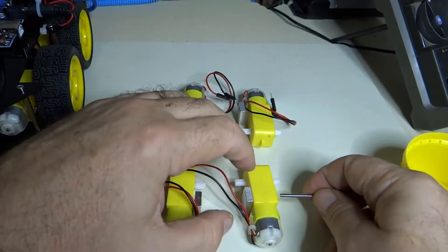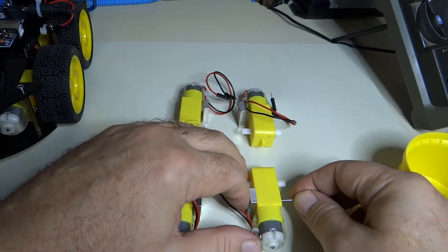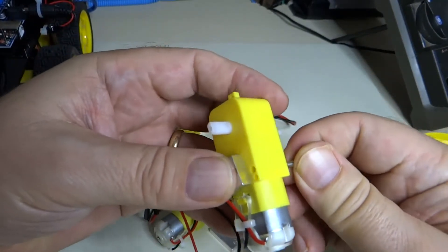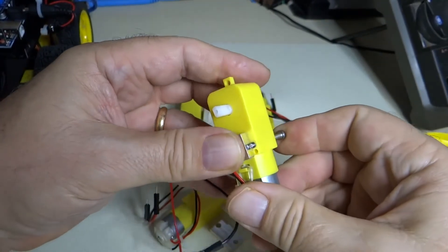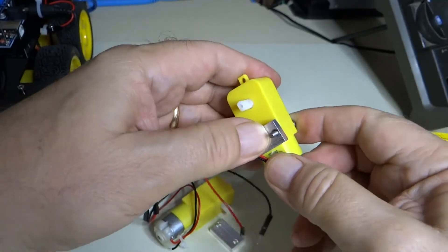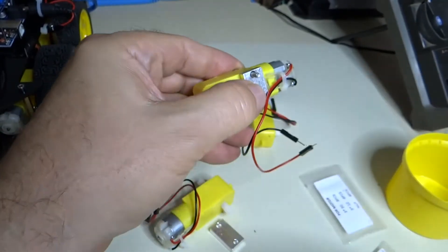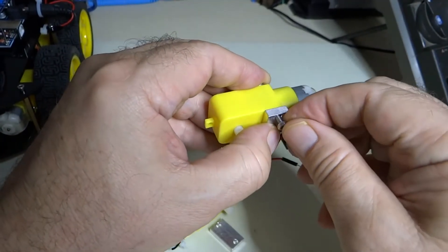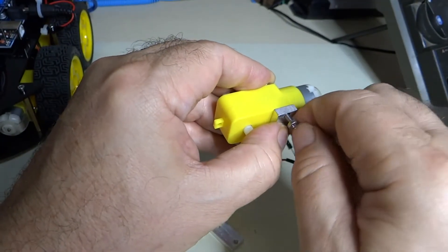So now we want to feed the screw in this end. Sometimes it's a little snug. Snap it all the way through. We'll put the bolt on here.